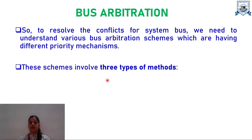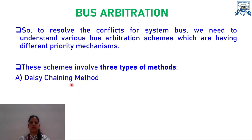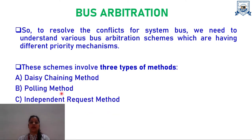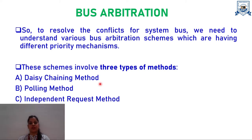There are three universal bus arbitration methods. First one is your daisy chaining method, second is your polling method, and the third one is the independent request method. All these methods have their own advantages, disadvantages, and applications, which we are going to study in detail in this video lecture.